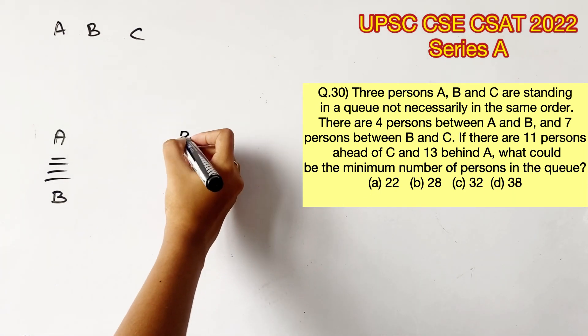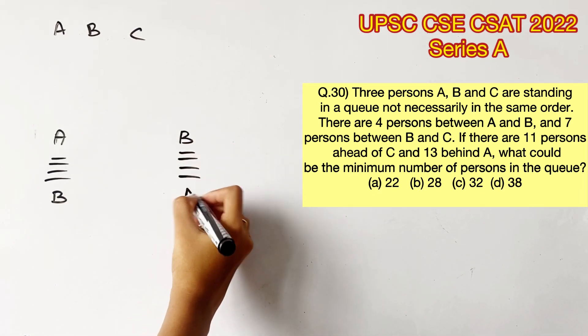Now there is also another possibility where B can be in front of A, right? So we are putting 2 possibilities here.